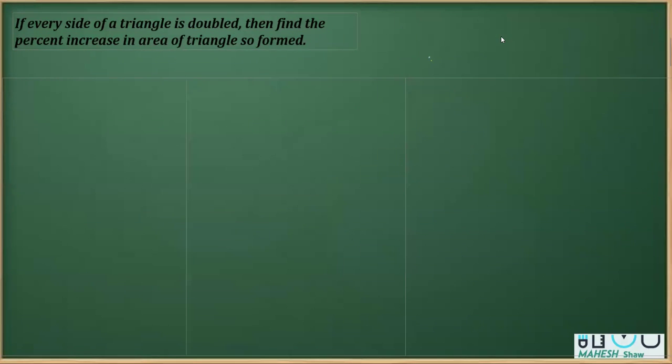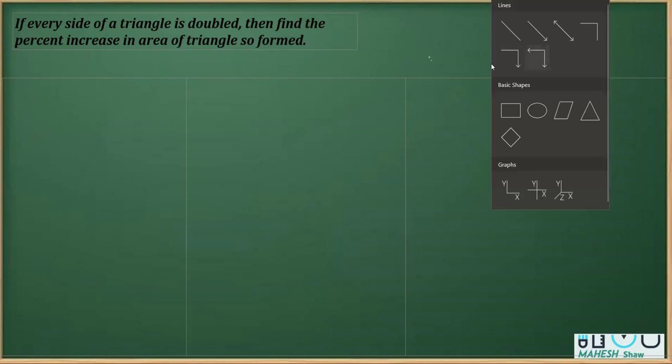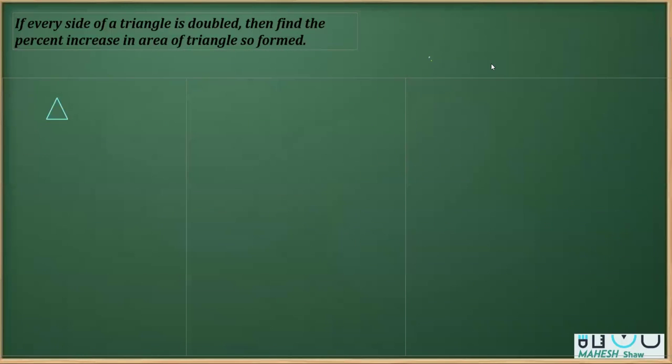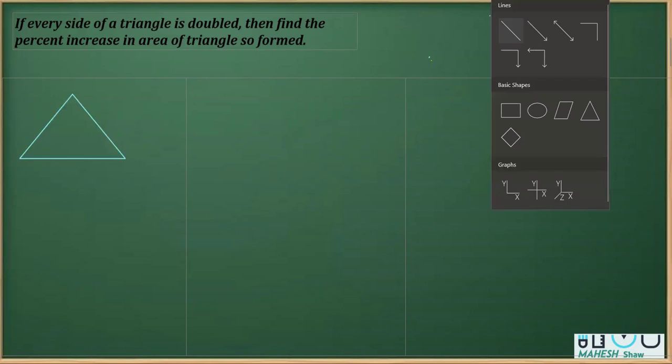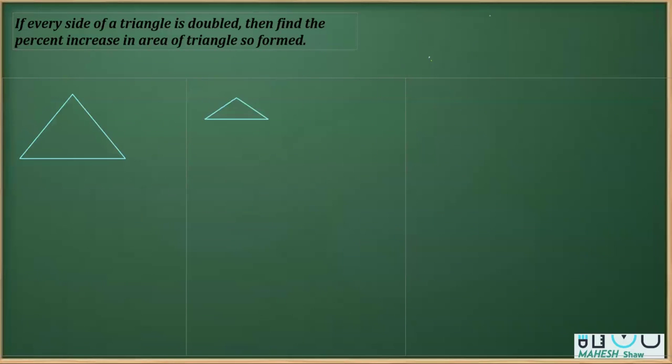So what I'm going to do, let's say for example, if I draw a triangle here, I'm drawing a triangle. And say this is one triangle. And then I'm going to make another triangle. And let's say this is the first triangle. And the other triangle so formed is over here.